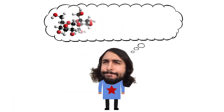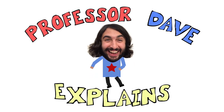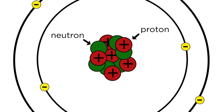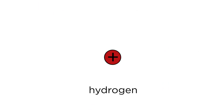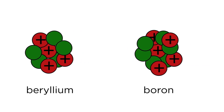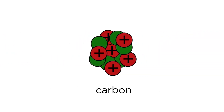Hey, it's Professor Dave. Let's talk about carbon. You may have heard that carbon is the element of life. But what does that mean? What determines whether an atom is carbon in the first place? An atom consists of positively charged protons, neutrons which have no charge, and negatively charged electrons. An element is defined by the number of protons in the nucleus: one proton is hydrogen, two is helium, three lithium, four beryllium, five boron, and six is carbon. The number of neutrons and electrons can change, but by definition, any atom with six protons is a carbon atom.